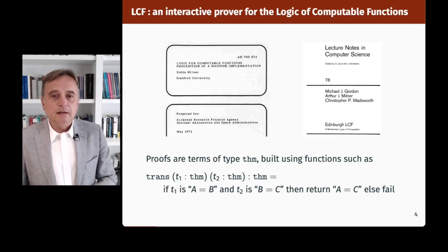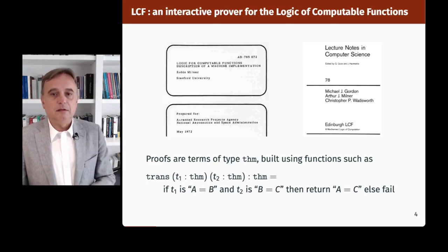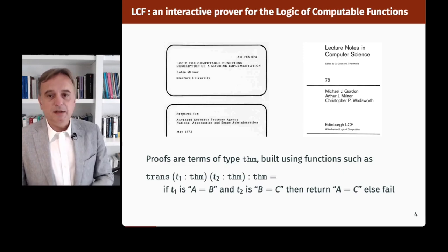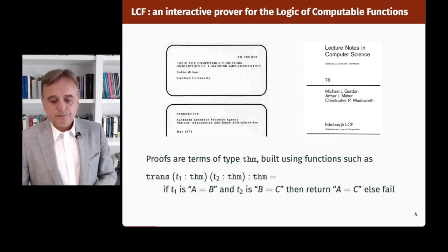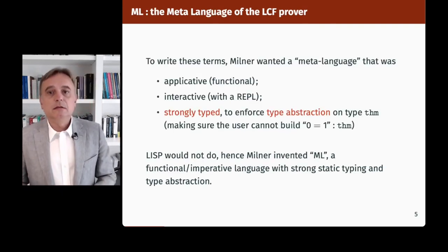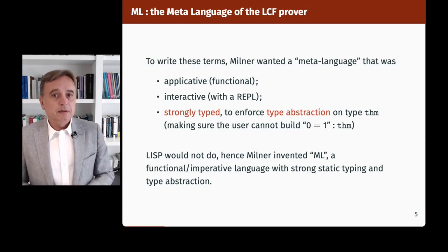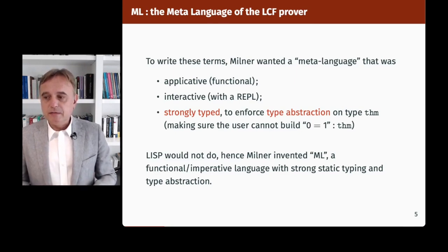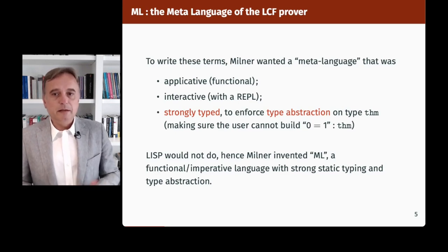For instance, this is the inference rule for transitivity of equality. Trans T1 T2 checks that T1 proves A equals B, and T2 proves B equals C, and then returns a theorem saying that A equals C has been proved; otherwise it would fail. To write these terms, Milner wanted a meta-language that was applicative, functional, interactive with a read-print loop, and strongly typed to enforce type abstraction on type THM.